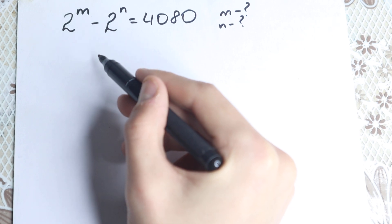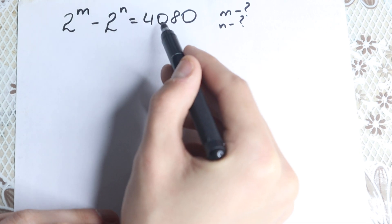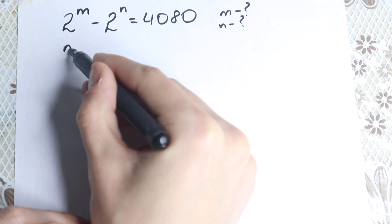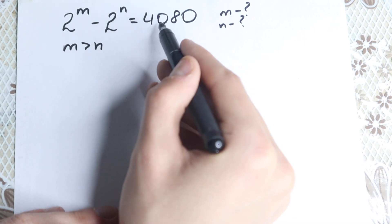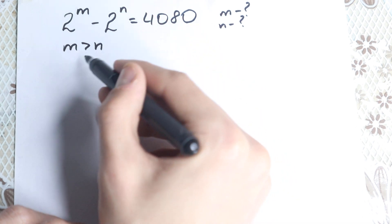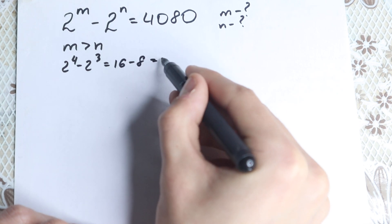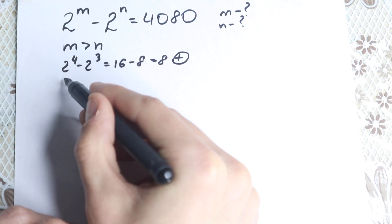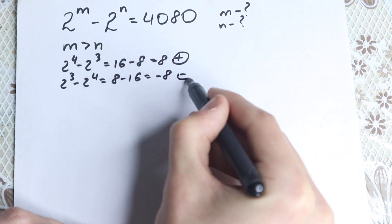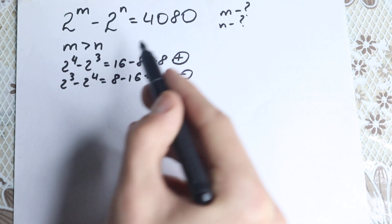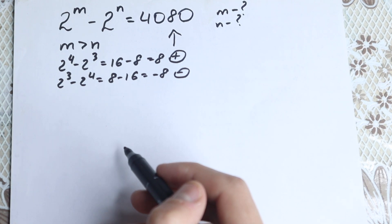I'm going to show you a really interesting approach. First of all, we have 2 to the m and 2 to the n, we have subtraction and a positive number on the right-hand side. This tells us that m is greater than n — because this number is larger than this one, since we have a positive result. For example, 2 to the 4th minus 2 cubed equals 16 minus 8, which is positive 8. But 2 to the 3rd minus 2 to the 4th equals 8 minus 16, which is negative 8. So the first number must be bigger when we get a positive result. Therefore m is greater than n.